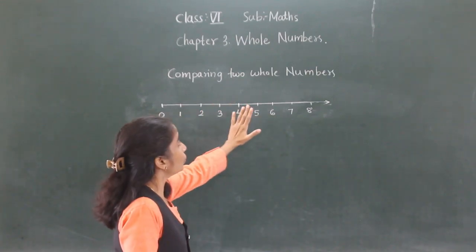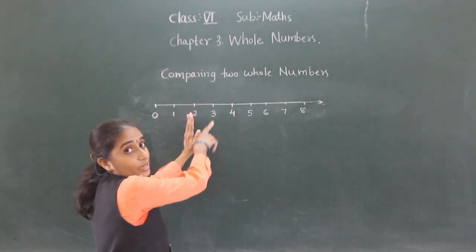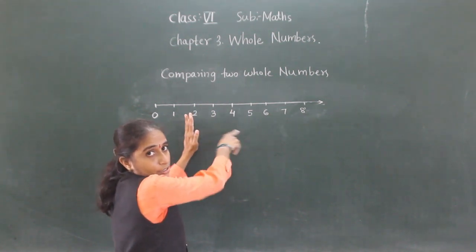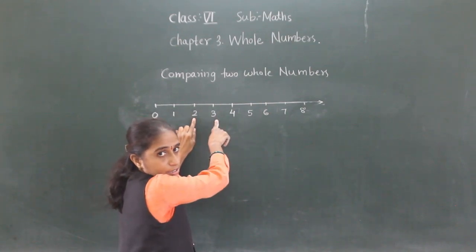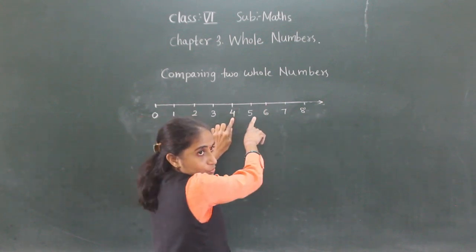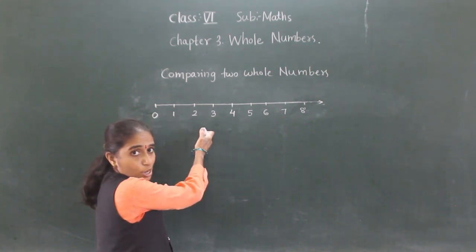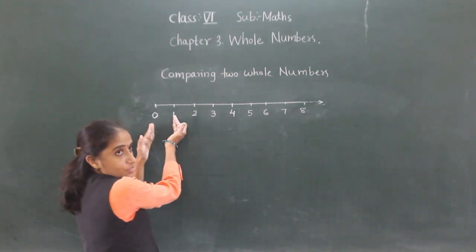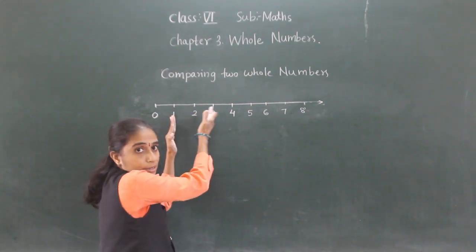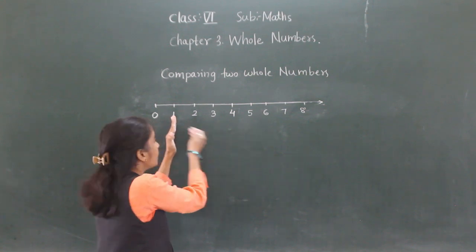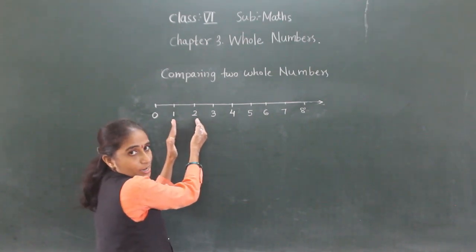Comparing two whole numbers: the number to the right of another number is the greater number. For example, right of 2 is 3, so 3 is greater. Right of 4 is 5, so 5 is greater. The number on the left is the smaller number — left of 1 is 0, so 0 is smaller; left of 2 is 1, so 1 is smaller.